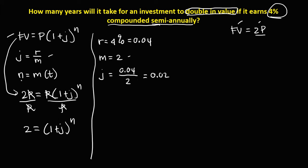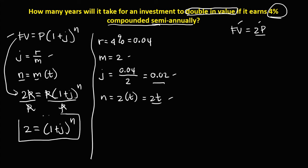For the number of periods N, we have the compounding period times the time, so N equals 2 times the time, where the time is the unknown we need to find.